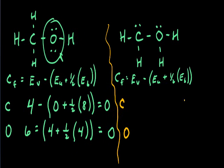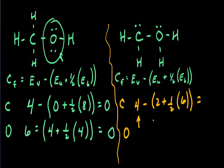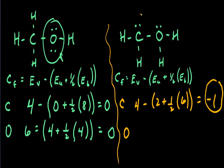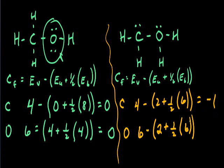Let's repeat the calculation now for the carbon and oxygen in the alternative Lewis structure. In this Lewis structure, carbon still has four valence electrons. It has two unshared electrons and six bonding electrons coming from the three single bonds attached to it. Calculating the formal charge, we get a value of negative one for carbon in this Lewis structure. For the oxygen atom, oxygen still has six valence electrons, with two unshared electrons and six bonding electrons from the three single bonds attached to it.